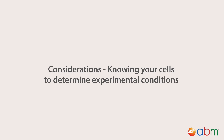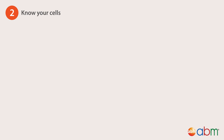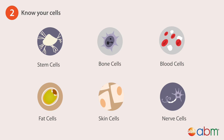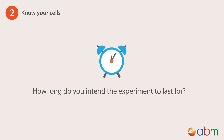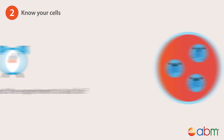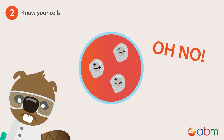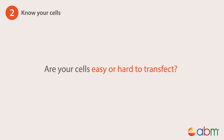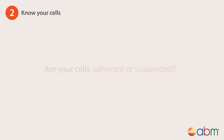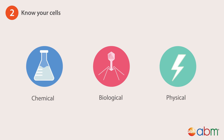Second, know your cells to determine the experimental conditions. Every cell and cell line is different. Consider the lifespan of your cells — how long do you intend the experiment to last? You don't want your cell population to die off due to finite lifespan before your experiment is over. Are your cells easy or hard to transfect? Adherent or suspension? You will need to determine which transfection method works best for your cell type.